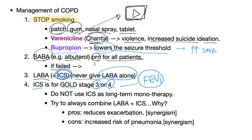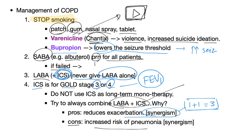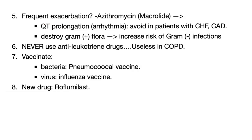Do not use inhaled corticosteroids as long-term monotherapy, and do not use oral corticosteroids long-term because of side effects. Always combine long-acting beta agonists with ICS — why? They reduce exacerbation. This is called synergism: 1 plus 1 equals 3 — a mathematical insanity but a pharmacological reality. The con: increased risk of pneumonia, because steroids suppress immunity.